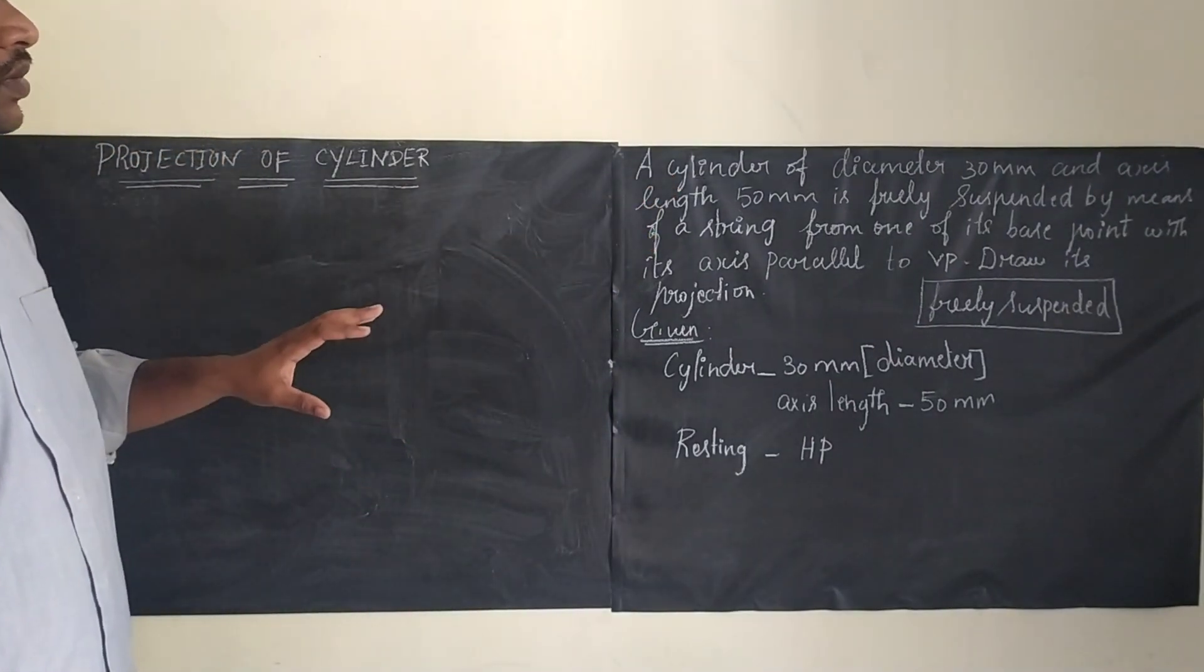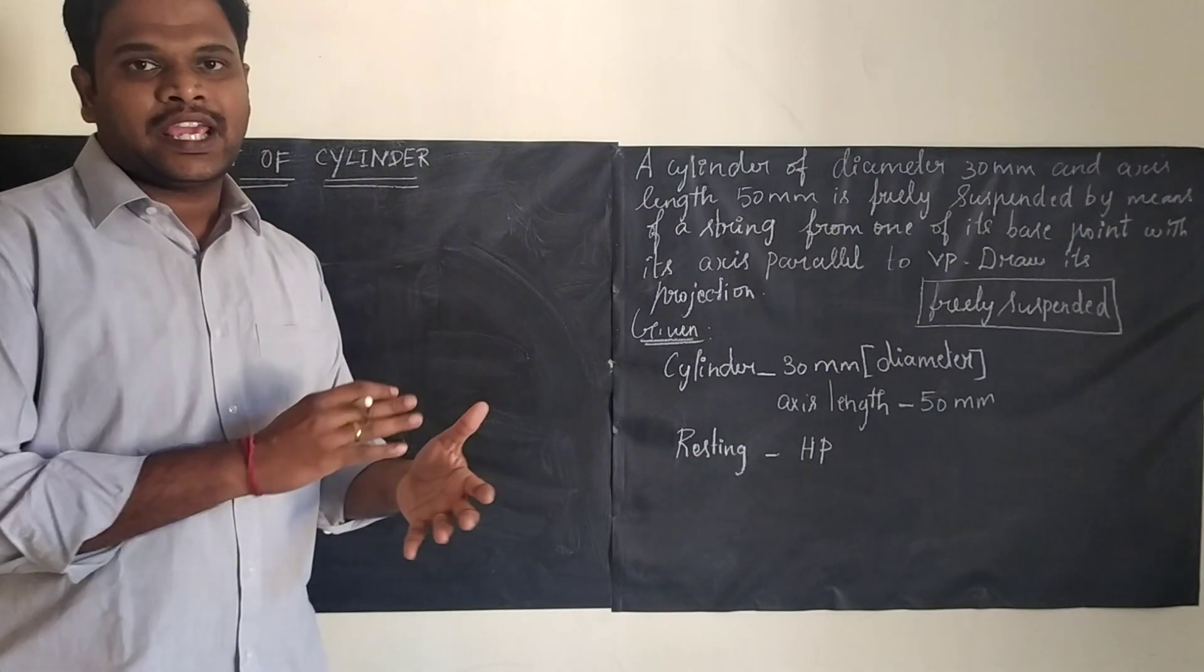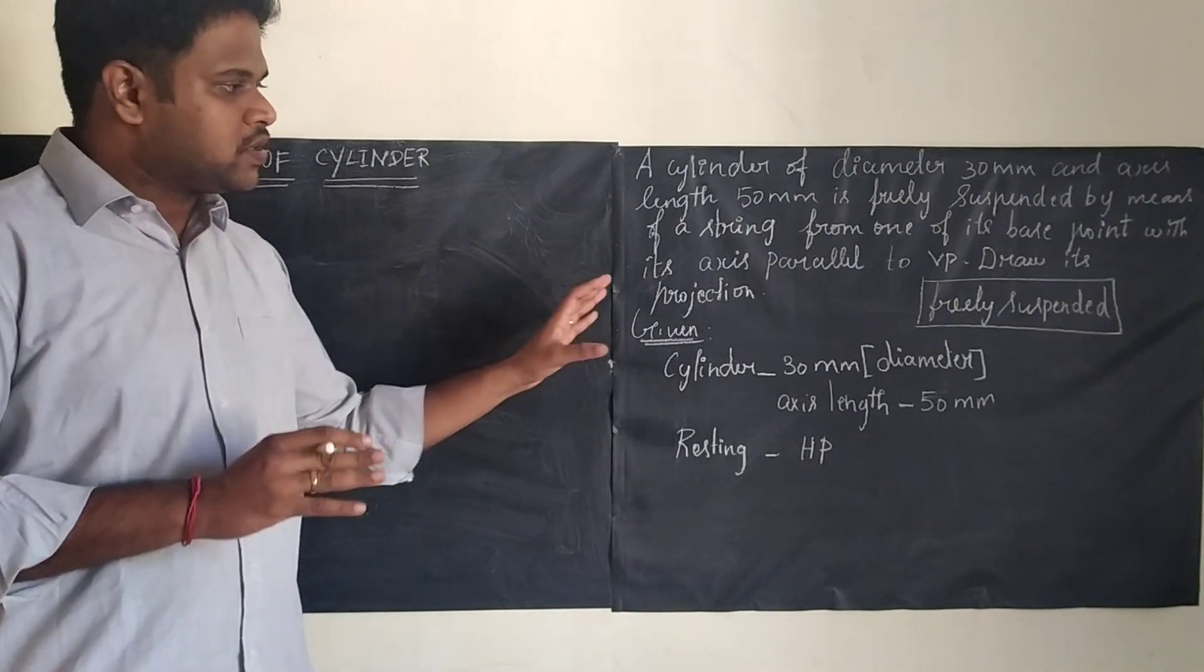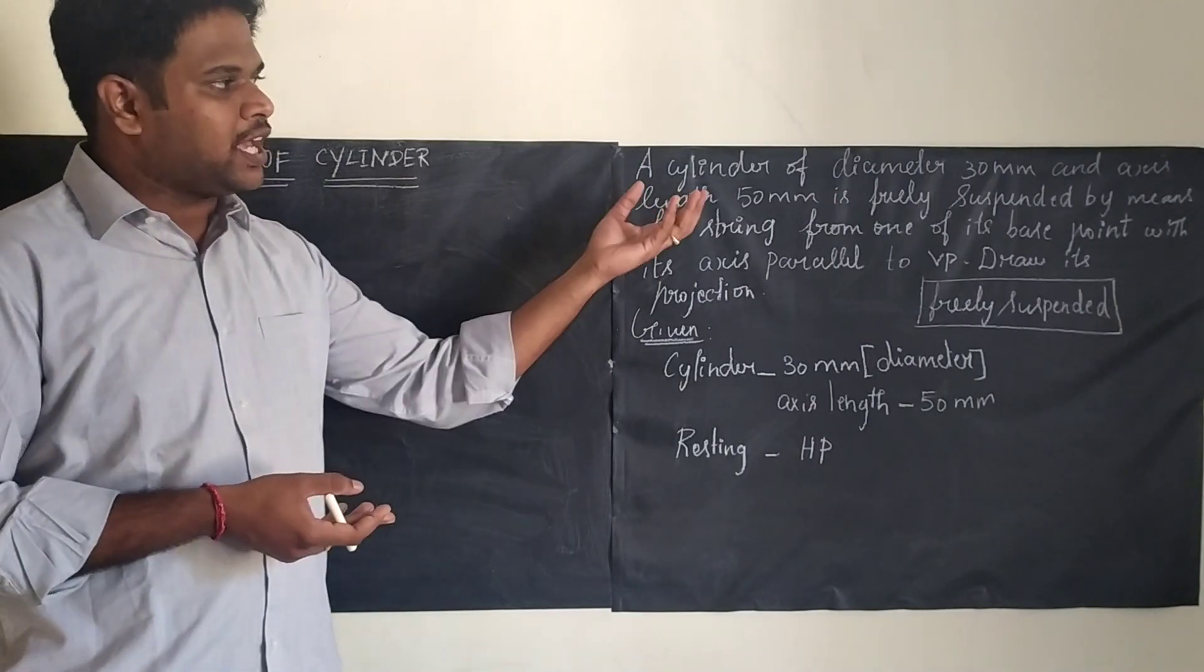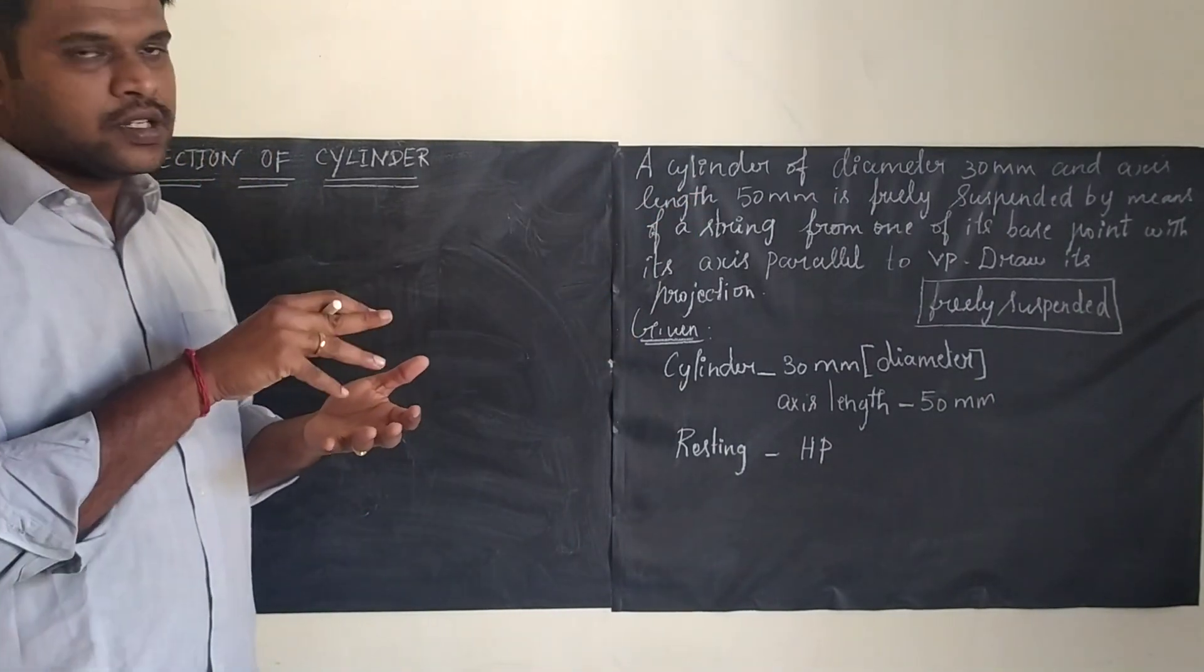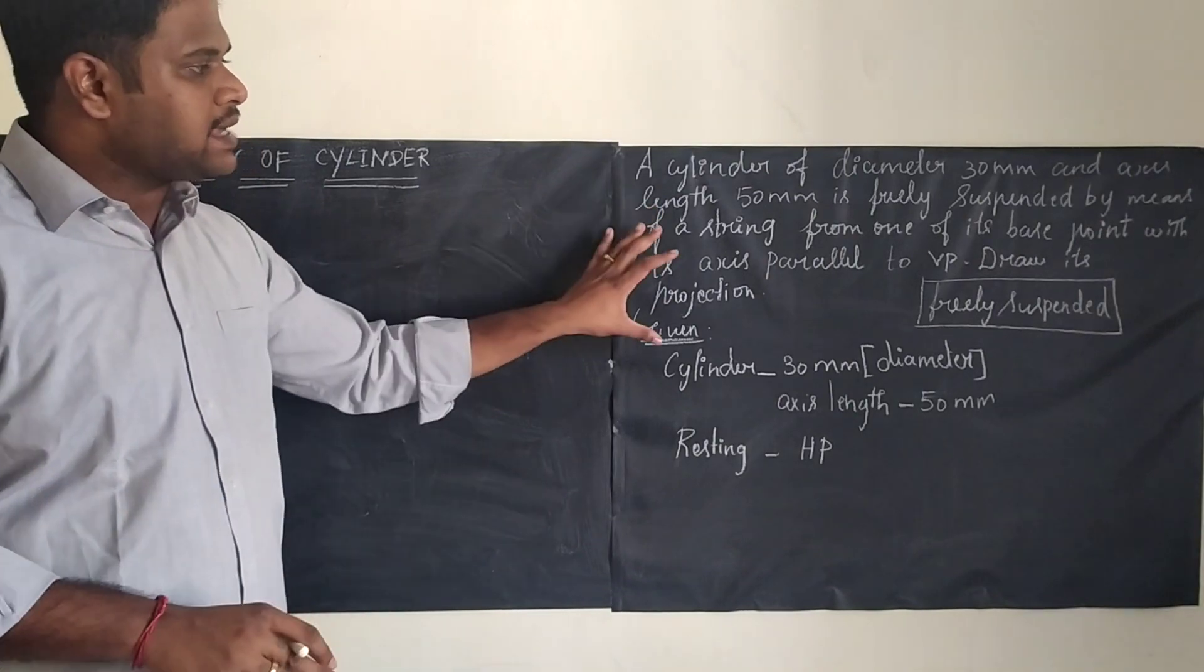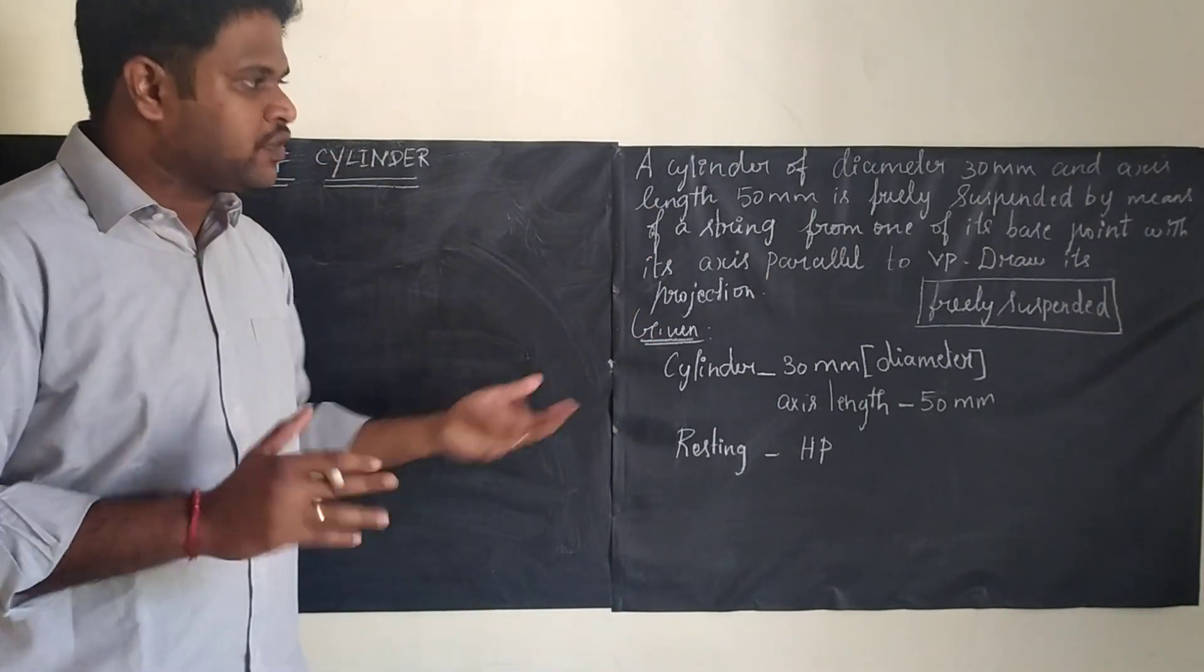A cylinder of diameter 30 mm and axis length 50 mm. So the diagram we are going to draw is a cylinder. The circle diameter is 30 mm, meaning radius is 15 mm. So we are going to draw a circle of radius 15 mm. Axis height of the cylinder is 50 mm.